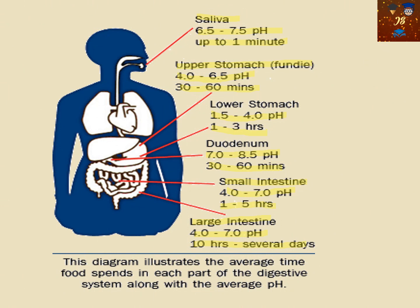This is a very interesting diagram that illustrates the average time food spends in each part of the digestive system along with the average pH. So what is pH? pH is the hydrogen ion concentration, and this concentration is neutral at 7.4.